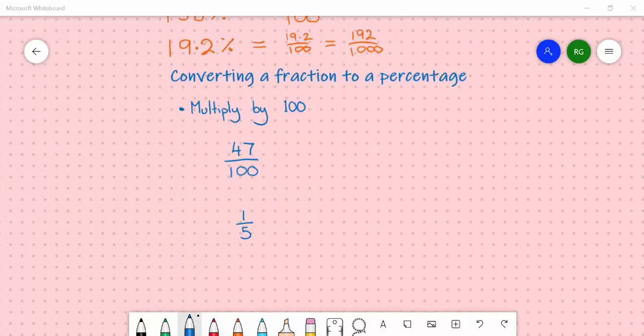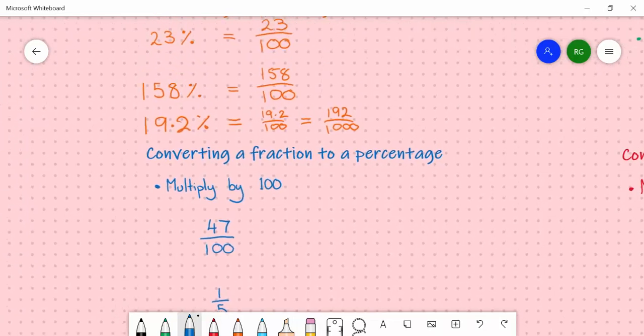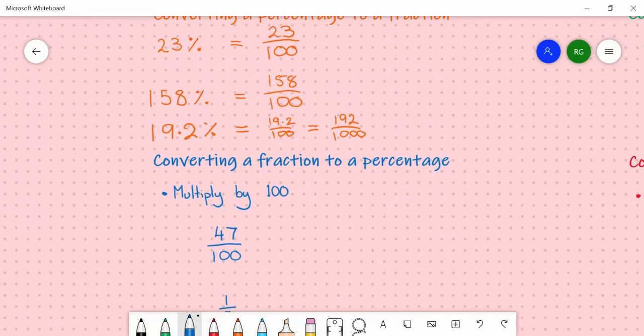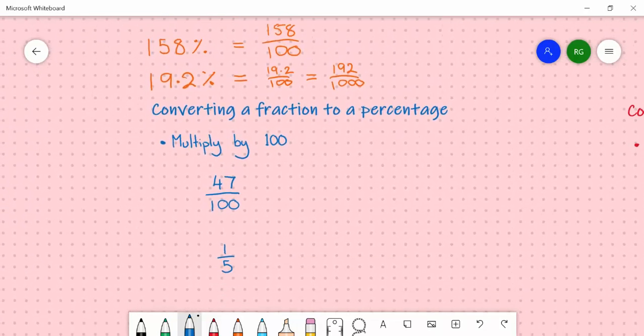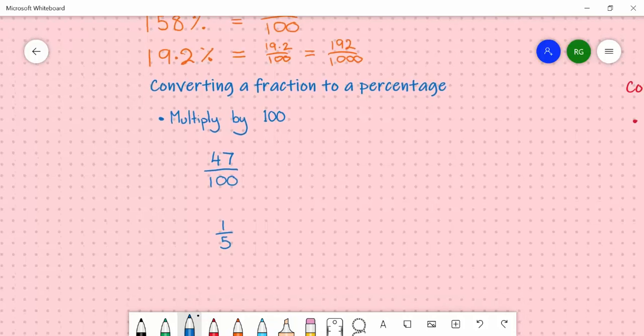We're now going to look at converting a fraction back to a percentage. So this is the opposite of the orange section. What we effectively did before was divide the percentage number by 100. In this case we're doing the opposite. We've got to multiply it by 100.